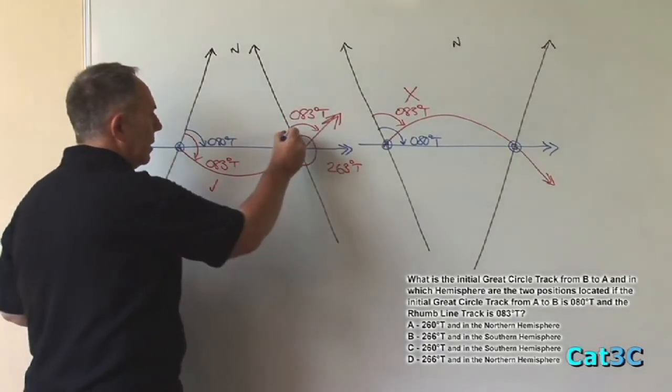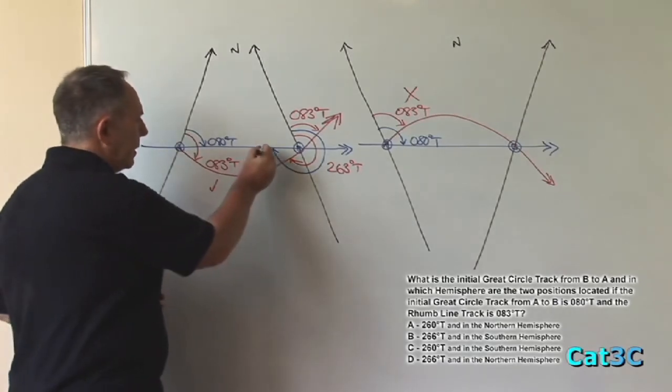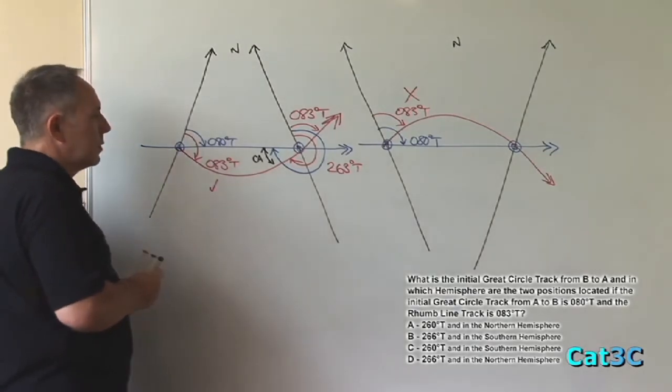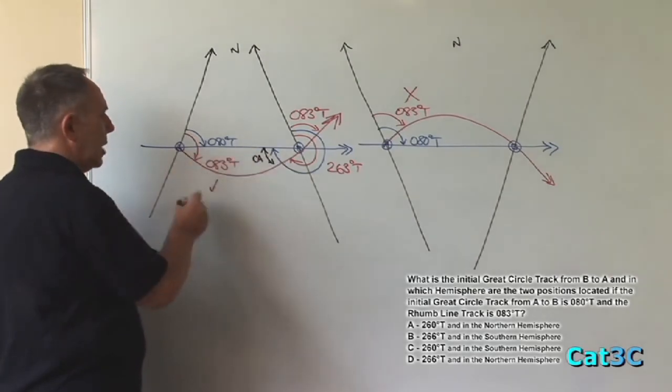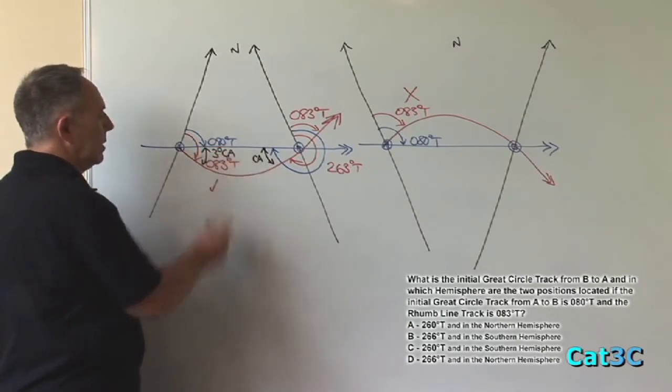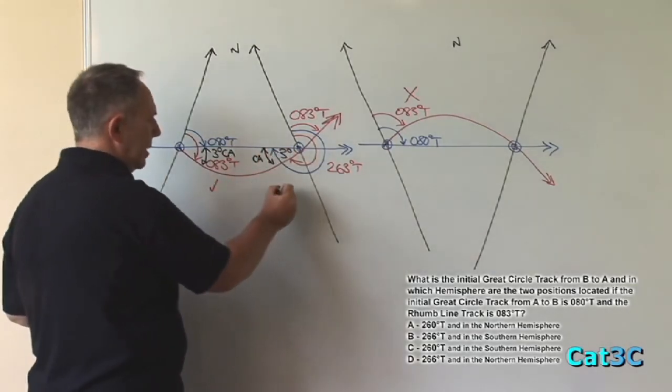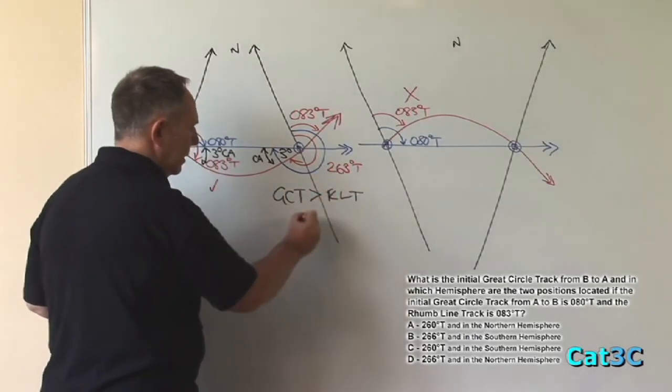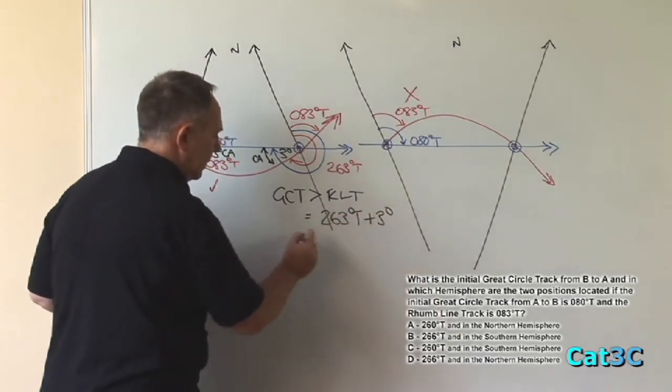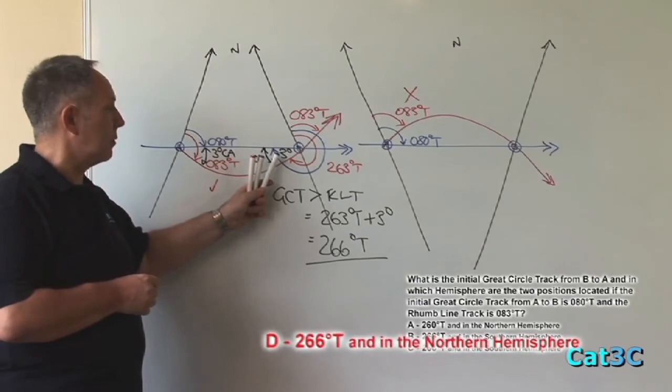The great circle track, we can see, is greater than the rum line track by that angle which is conversion angle. And conversion angle is the difference between the great circle track and the rum line track. And we will have one at each end. Where we can see the value of the conversion angle at this end is the difference between 83 and 80, which is 3 degrees. If it's 3 degrees on this side, it will be 3 degrees on this side. So the great circle track is greater than the rum line track, therefore it's equal to 263 degrees true plus the 3 degrees equals 266 degrees true. Therefore, the answer must be 266 degrees true and in the Northern Hemisphere.